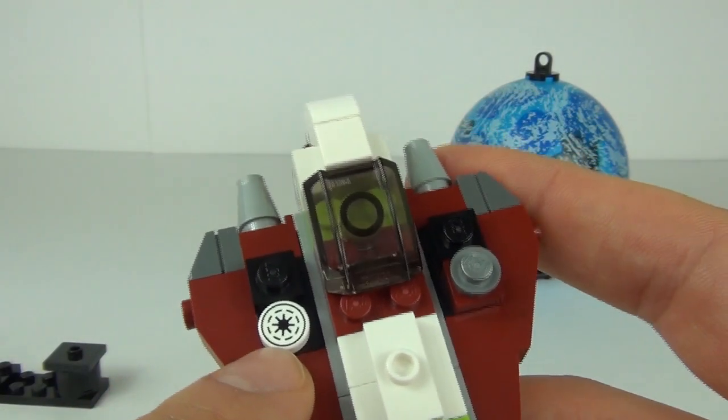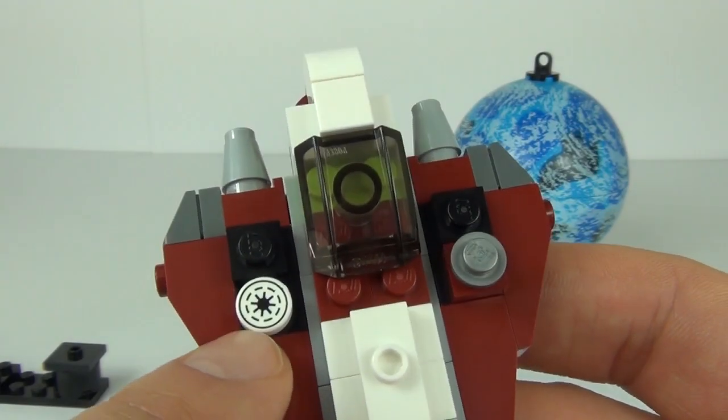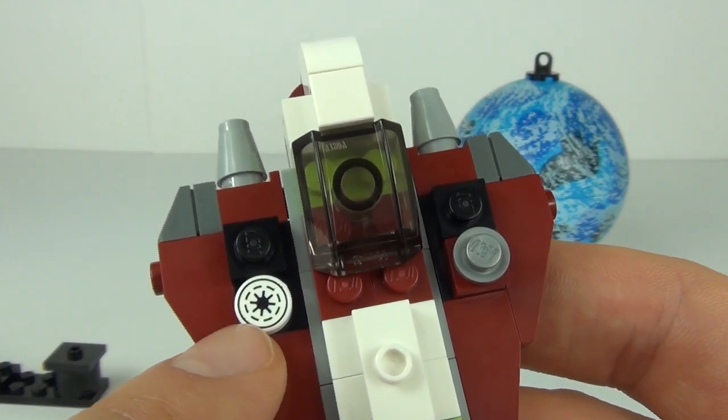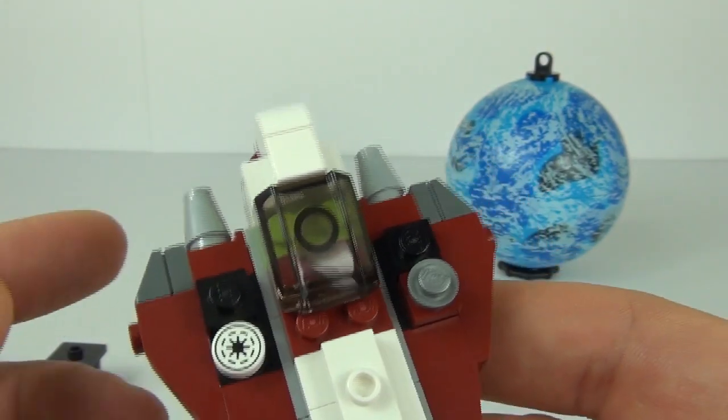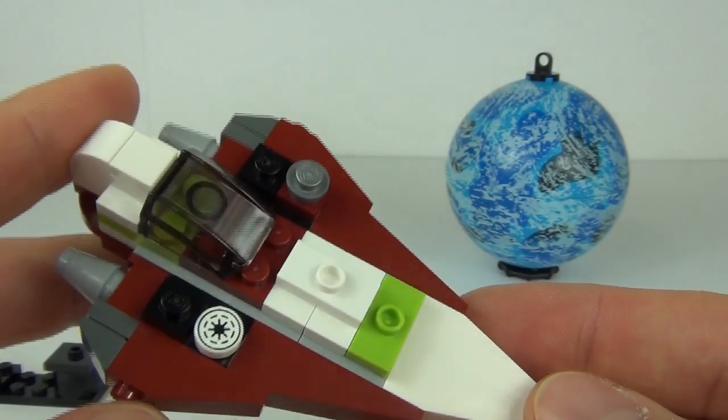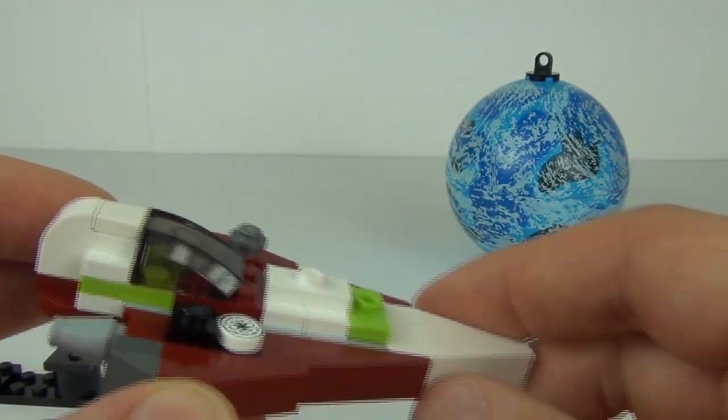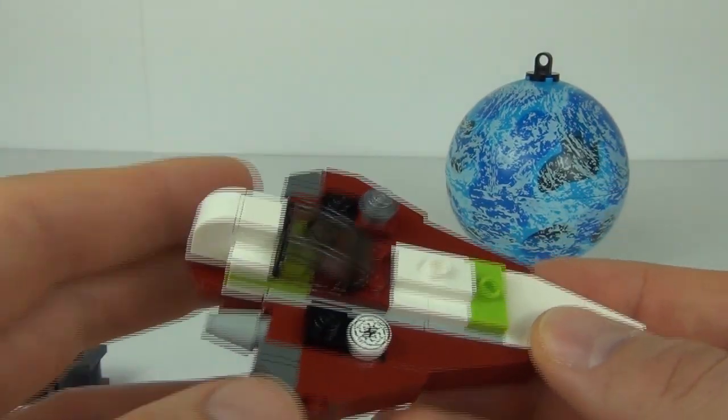Now you do get a really cool piece with this. I don't think we have seen this before. But it is the Rebel Alliance symbol. And that is a printed small tile piece. Now you do get two of these in this set guys. You do get a spare. So that is a massive thumbs up. So if my memory serves me right that is an exclusive piece.